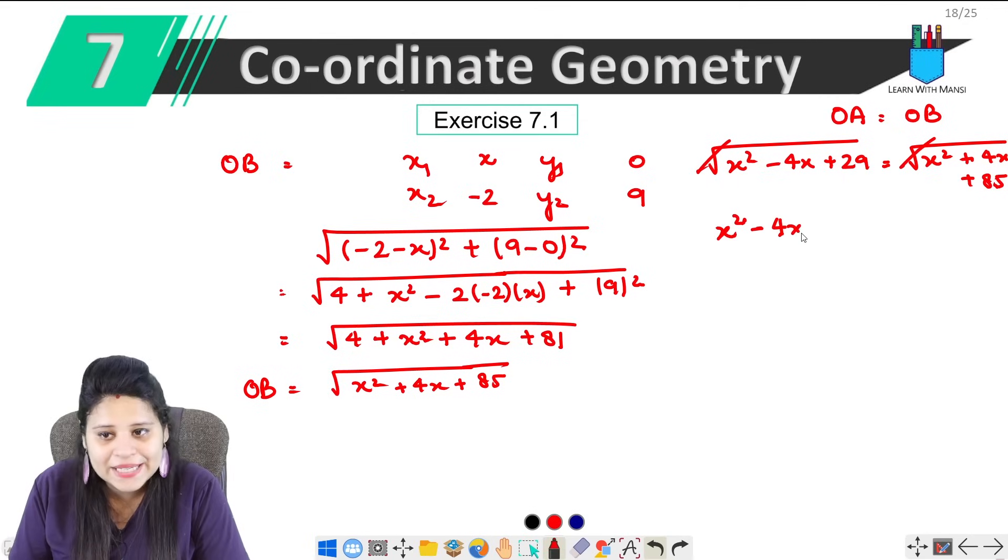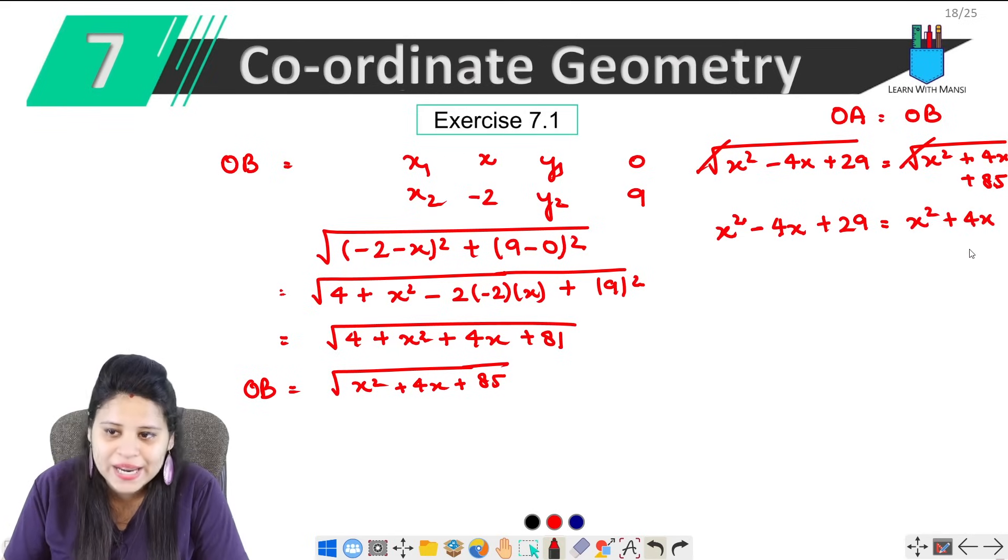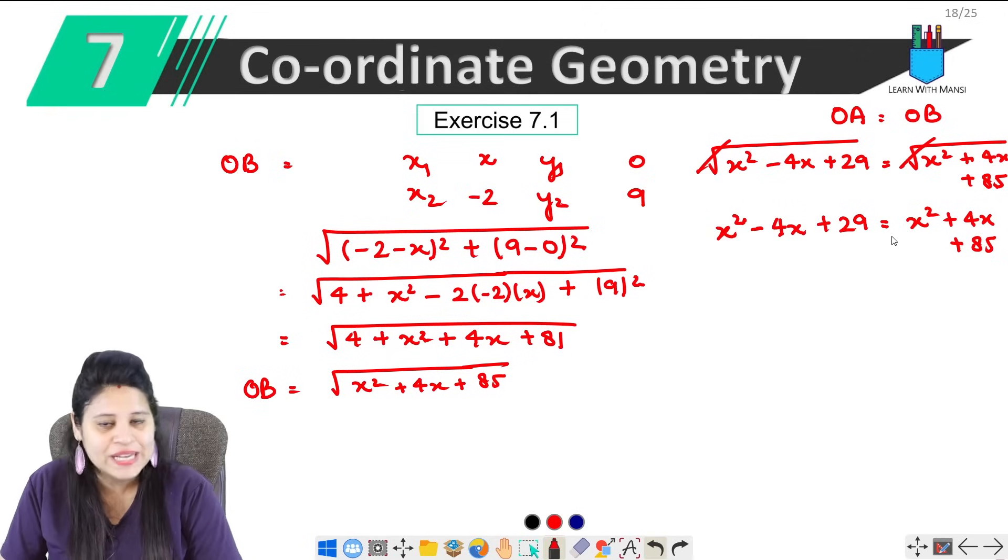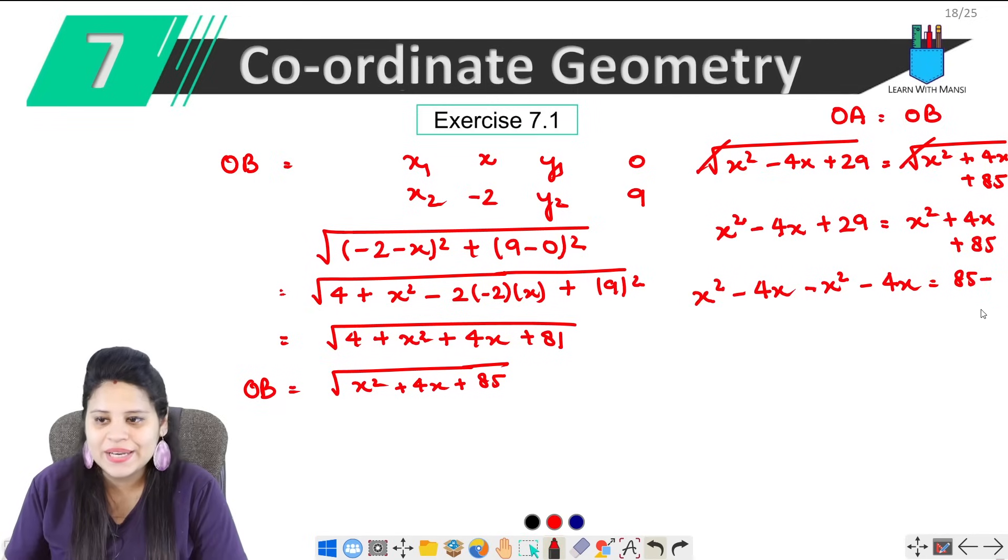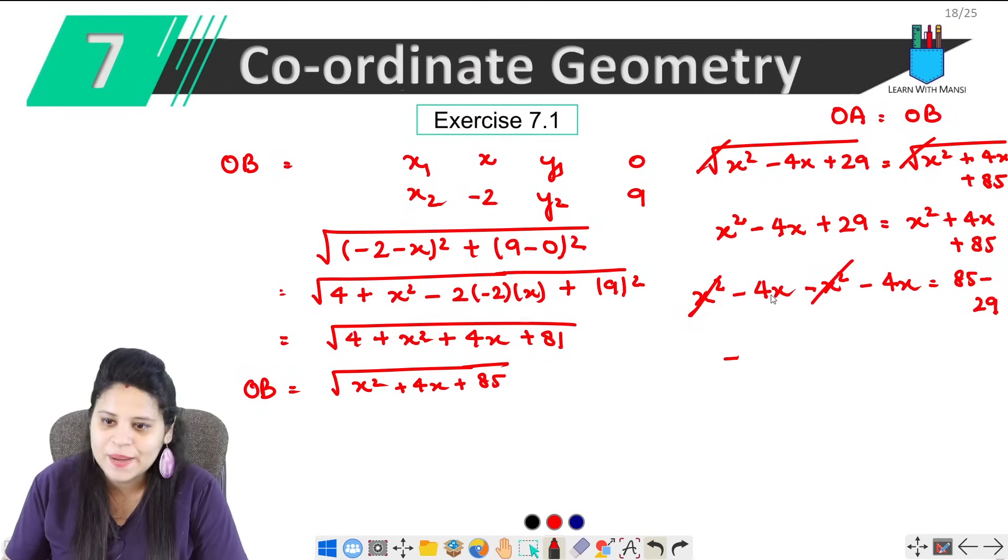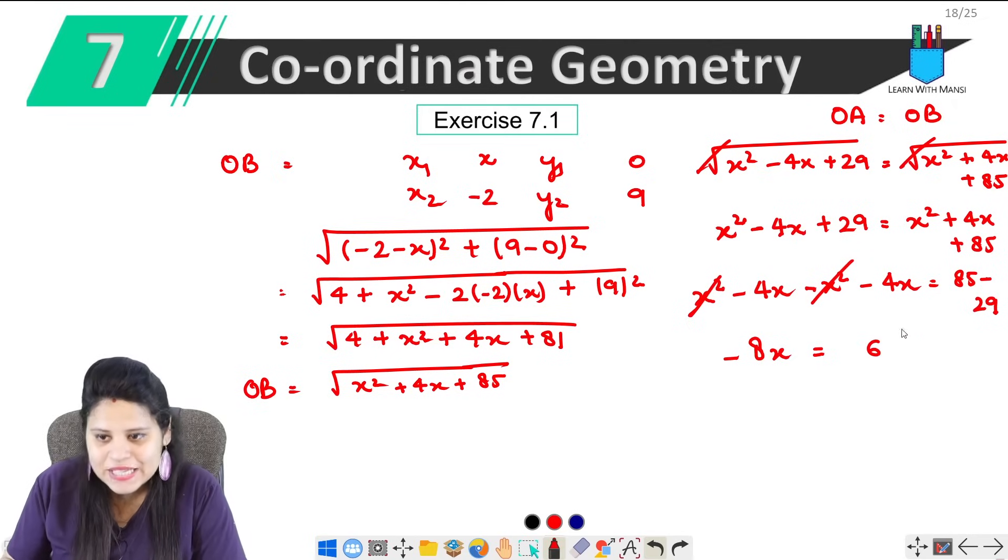x² - 4x + 29 equals x² + 4x + 85. x values on one side, numbers on one side. x² - 4x - x² - 4x equals 85 - 29. x² from x² will cancel. -4x - 4x is -8x equals 85 - 29. 85 - 29, 15 - 9 is 6, this will be 7, 7 - 2 is 5, so 56. Now -8x = 56.